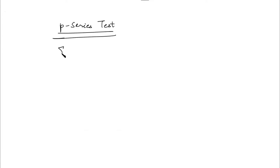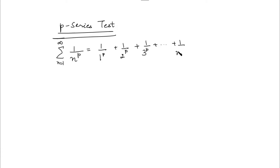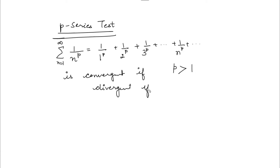So what is the P-series test? This test says that if you have a series of the form 1 over n to the power P, where n varies from 1 to infinity — that is, 1/1^P + 1/2^P + 1/3^P and so on — then the P-series test says this series is convergent if P is greater than 1, and divergent if P is less than or equal to 1. This is used to check the behavior of any series of the form 1 over n to the power P.